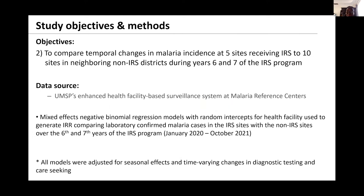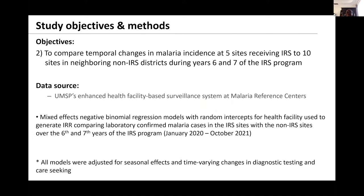From these results, we considered whether something broader was happening across Uganda. As a second objective, we looked at temporal changes in malaria at the five IRS sites in the sixth and seventh year, and compared them to 10 neighboring sites not receiving IRS. We used malaria surveillance data and mixed effects negative binomial regression models, adjusted for seasonal effects and time-varying changes in diagnostics and care seeking.